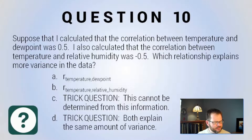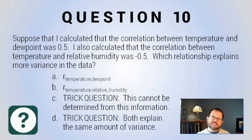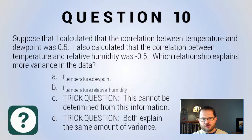Okay, well, the right answer here is D. Remember, percent variance explained is about correlations squared.